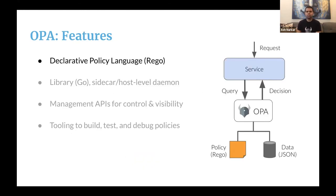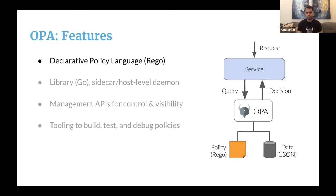Now let's look at some of OPA's features. At the core of OPA is a high-level declarative language called Rego. With Rego, you can write policy decisions which are more than just Boolean allow/deny — you can write decisions which are composite values like sets or objects, or strings. For example, you could have a policy decision asking whether Bob can access a resource, which is a Boolean, but you can also ask OPA what fields Bob is allowed to see. OPA is written in Go and you can deploy it as a sidecar, as a host-level daemon, or embed it as a library. It's designed to be as lightweight as possible, with all policies and data stored in memory.